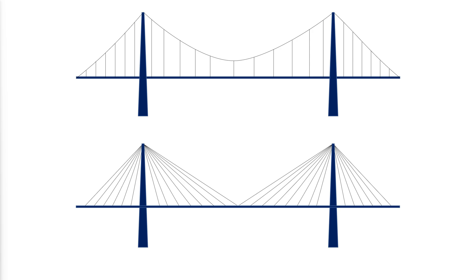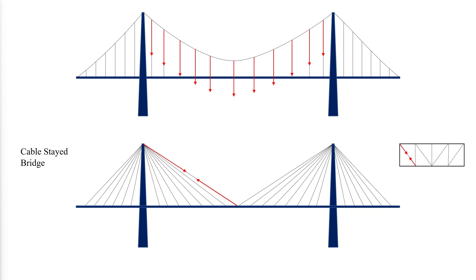In cable-supported structures, a single cable is used either to carry an axial load or to carry a transverse load. A typical example of a cable carrying axial load is the stay cable in a cable-stayed bridge, where the load transfer is very similar to that found in a tension diagonal of a truss. A typical example of a cable carrying transverse load is the suspension bridge main cable, whose load-carrying performance is similar to that of a beam, and is the topic of discussion in this video.